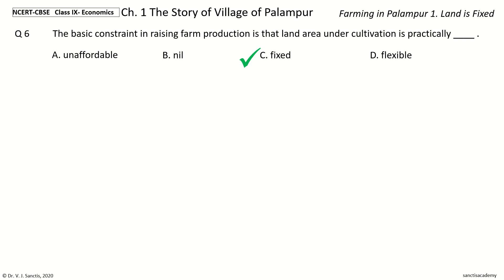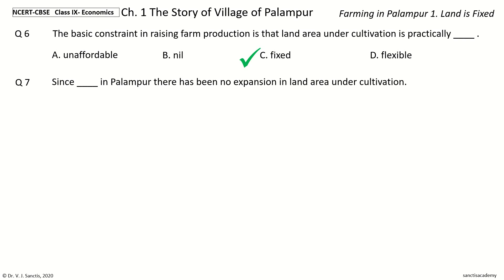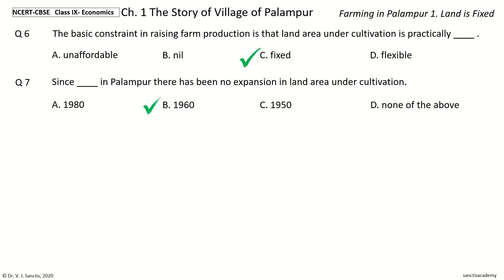Question 7: Since Dash in Palampur, there has been no expansion in Land Area under Cultivation. The options are 1980, 1960, 1950, none of the above. Your time to choose. And the answer is 1960. So, since 1960 in Palampur, there has been no expansion in Land Area under Cultivation.